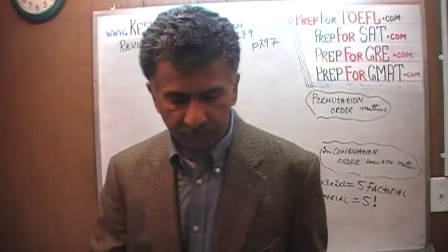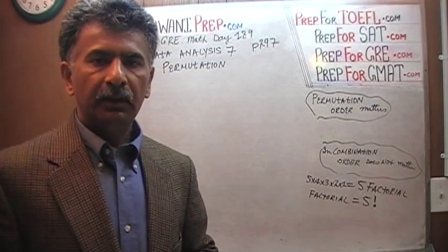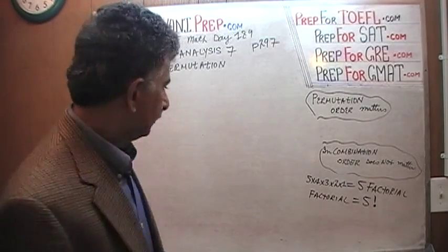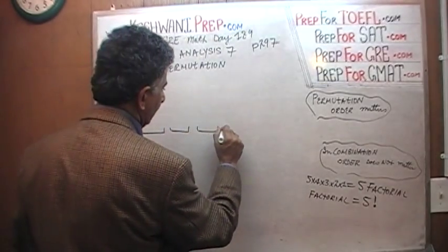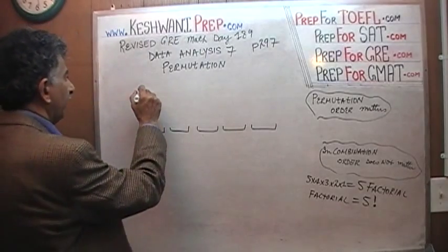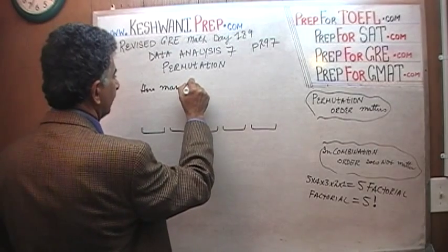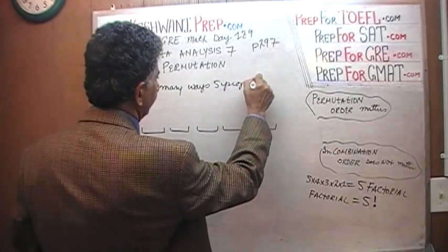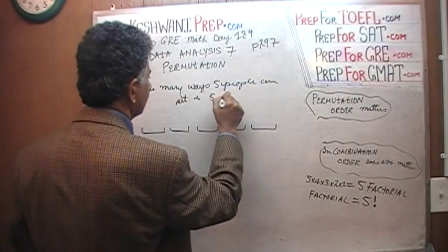Yesterday, we did a similar problem where we had five people and we were asked to arrange these five people in a sitting order. The question was, how many different ways can we arrange them? So we have five spots. This was yesterday's scenario. How many different ways can we fill up these five spots?